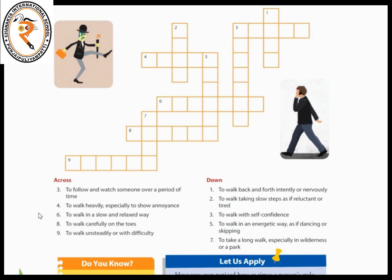The second clue is: to walk heavily, especially to show annoyance. The fourth word has 1, 2, 3, 4, 5 letters. It is a 5-letter word.